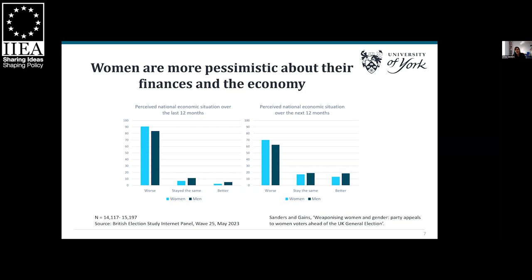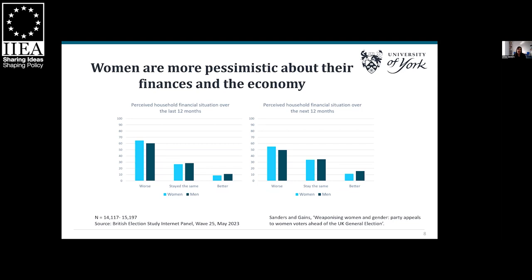When we look at attitudes towards the economy, respondents are generally very pessimistic, but it's women who are especially pessimistic. Around 90% of women think the national economy has got worse over the last 12 months, compared to 84% of men. Men are more likely to think the national economy has improved. There's still a gender gap on future outlook, with around 70% of women thinking the national economy will improve over the next 12 months compared to 62% of men. Women are also more pessimistic about their personal financial situation — around 65% think their household financial situation has got worse over the last 12 months compared to 60% of men, and women are more likely to think their financial situation will get worse.